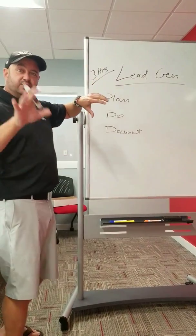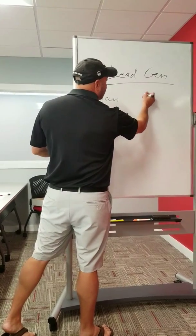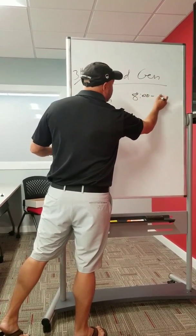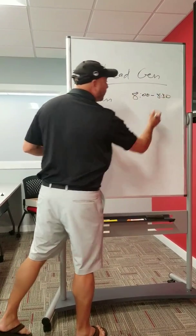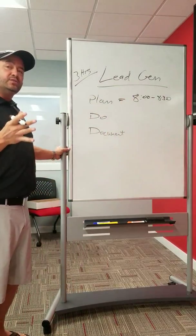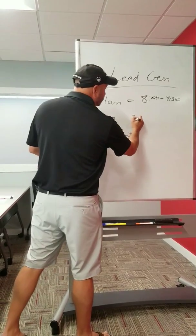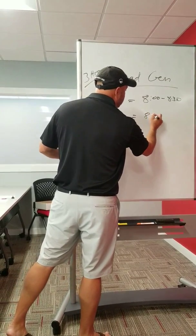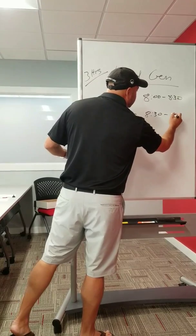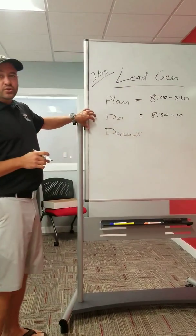Three hours a day of lead gen. Well here's what we want you to do during those three hours. Preferably 8 o'clock to 8:30 in the morning. That's your planning session. So for 30 minutes, you're going to plan what you're going to do for the next hour during this session.